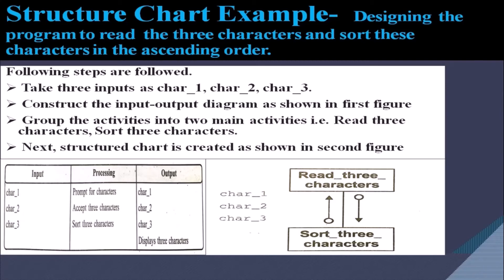The next step is to group the activities into two main activities: read three characters and sort three characters. Finally, the structure chart is created as shown in the figure. There are two modules — read three characters and sort three characters — both represented by rectangles. The data elements are character 1, character 2, character 3, and sorted characters, passed to and from the read three characters module.